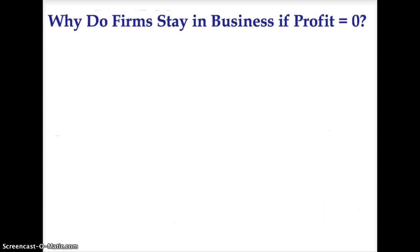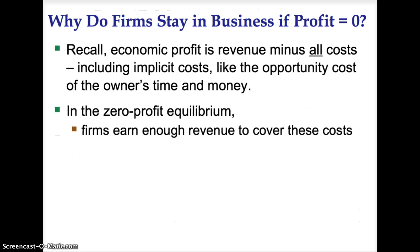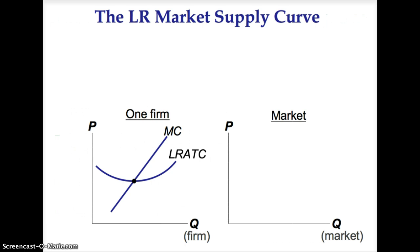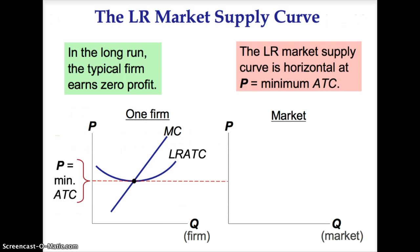It might seem strange that firms do not earn economic profits in competitive markets. But remember, economic profit is revenue minus all costs, including implicit costs like the opportunity costs of owners' time and energy. In the zero-profit equilibrium, firms earn enough revenue to cover these costs and accounting profit is positive. In the long run, the typical firm earns zero profit, and price equals the minimum of the average total cost curve. The long-run market supply curve is horizontal at the price equal to the minimum of average total cost.